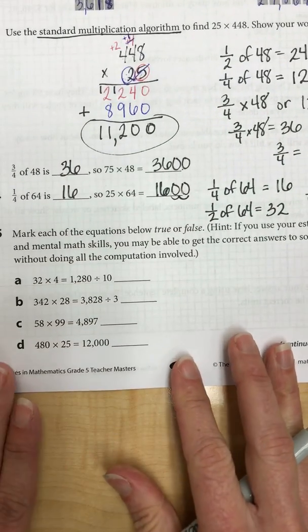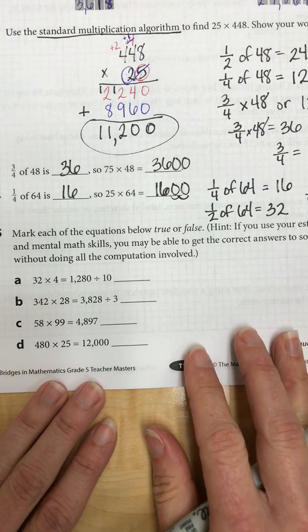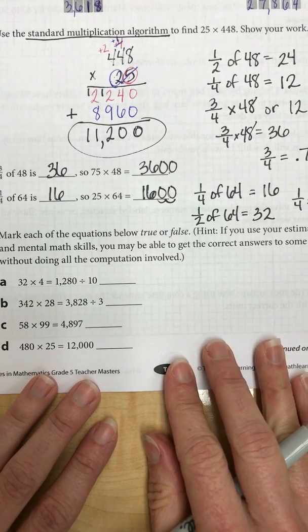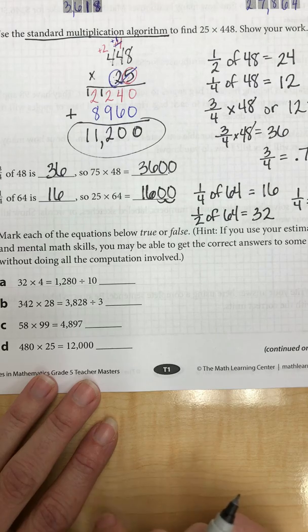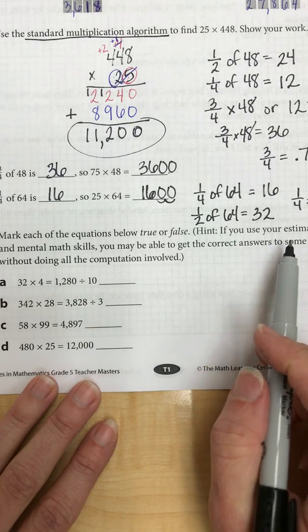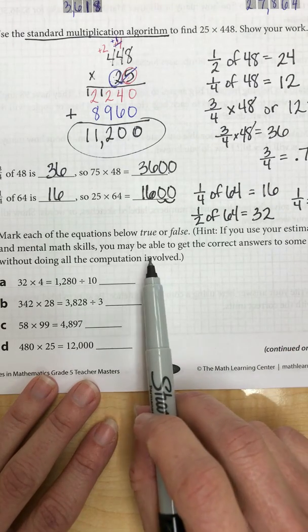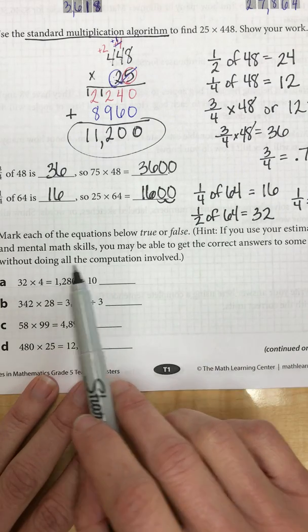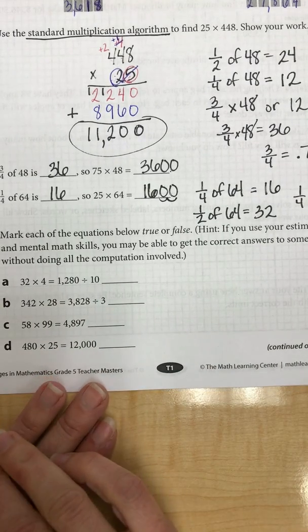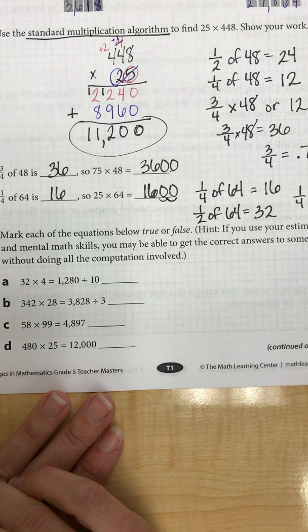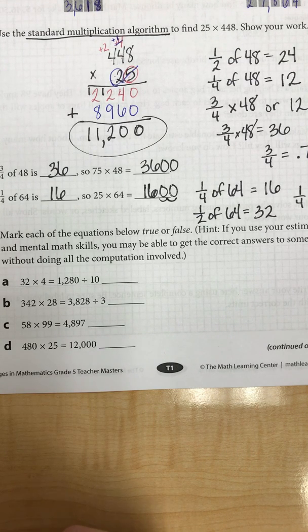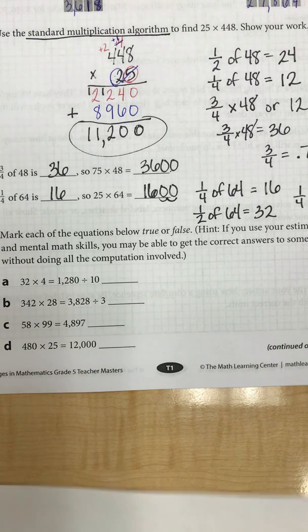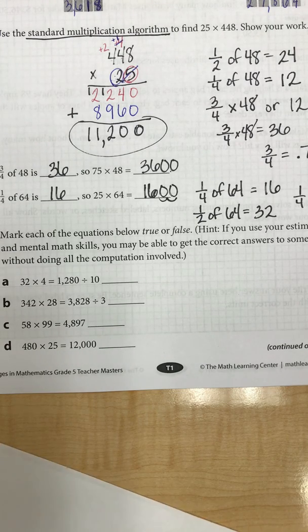Okay, I have four more problems down at the bottom. Number five, mark each of the equations true or false. You can use mental math or estimation. You may be able to get the correct answers to some without doing all the computation involved. Yay, that's exciting, right? If you don't have to actually do all the math, you can use some of your strategies to try and figure it out. So I'm going to get a piece of scratch paper because I don't have a lot of room on this.